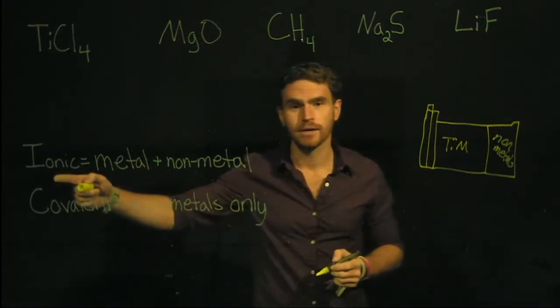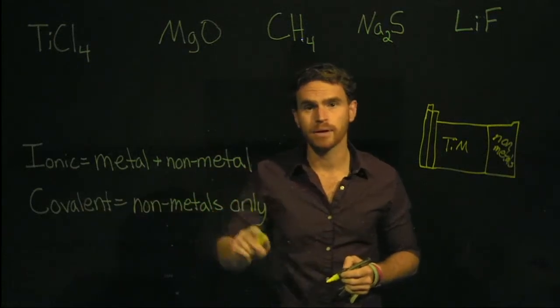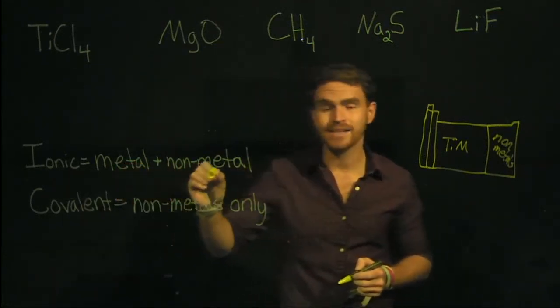An ionic bond, or an ionic compound, is going to be made up between atoms that reside as a metal and a non-metal.